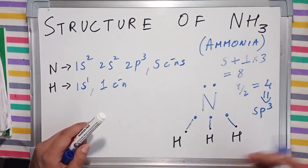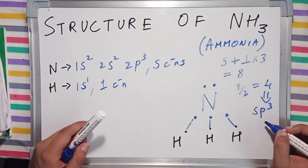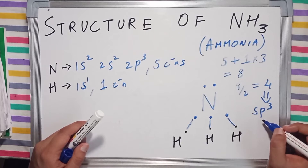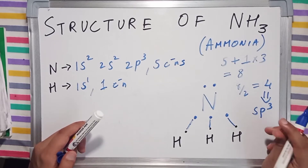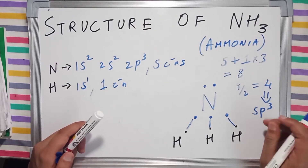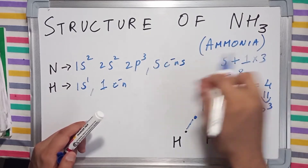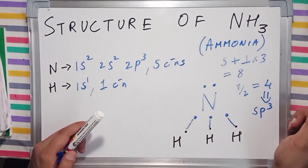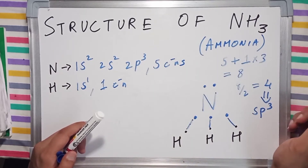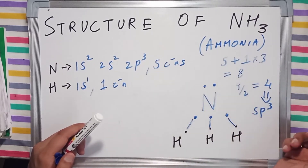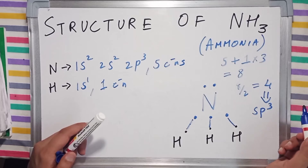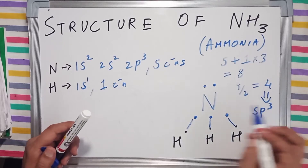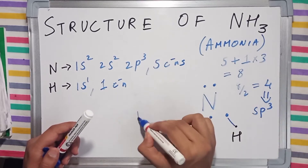According to the hybridization, its structure must be tetragonal. But since we do not include lone pairs in the structure, its 3D structure will be pyramidal.